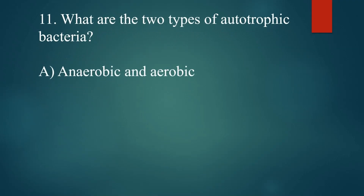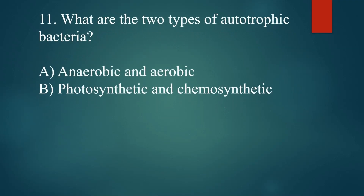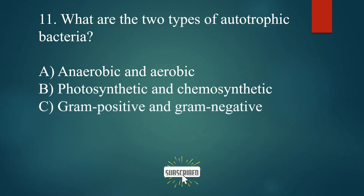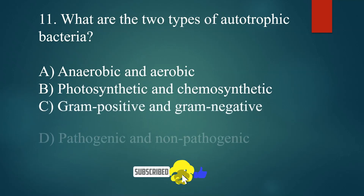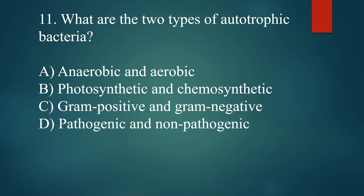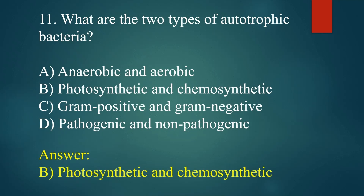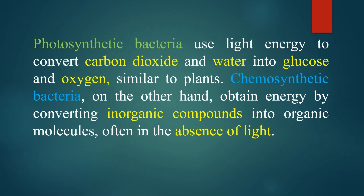What are the two types of autotrophic bacteria? A. Anaerobic and aerobic. B. Photosynthetic and chemosynthetic. C. Gram-positive and gram-negative. D. Pathogenic and non-pathogenic. Answer: B. Photosynthetic and chemosynthetic. Photosynthetic bacteria use light energy to convert carbon dioxide and water into glucose and oxygen, similar to plants. Chemosynthetic bacteria, on the other hand, obtain energy by converting inorganic compounds into organic molecules, often in the absence of light.